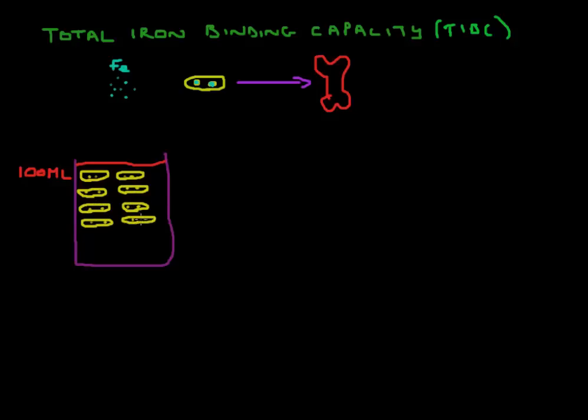As you can see, each transferrin molecule has got two seats, never more or less than that, so that is a fixed number. So what we can say about this is that the total iron binding capacity would be the maximum amount of iron that can bind to the transferrin molecules in this volume of blood. So as you can see here, because the number of seats per molecule is fixed, the number of molecules of transferrin will determine the total iron binding capacity. In other words, if you have less transferrin this will go down, and if you have more that will go up.